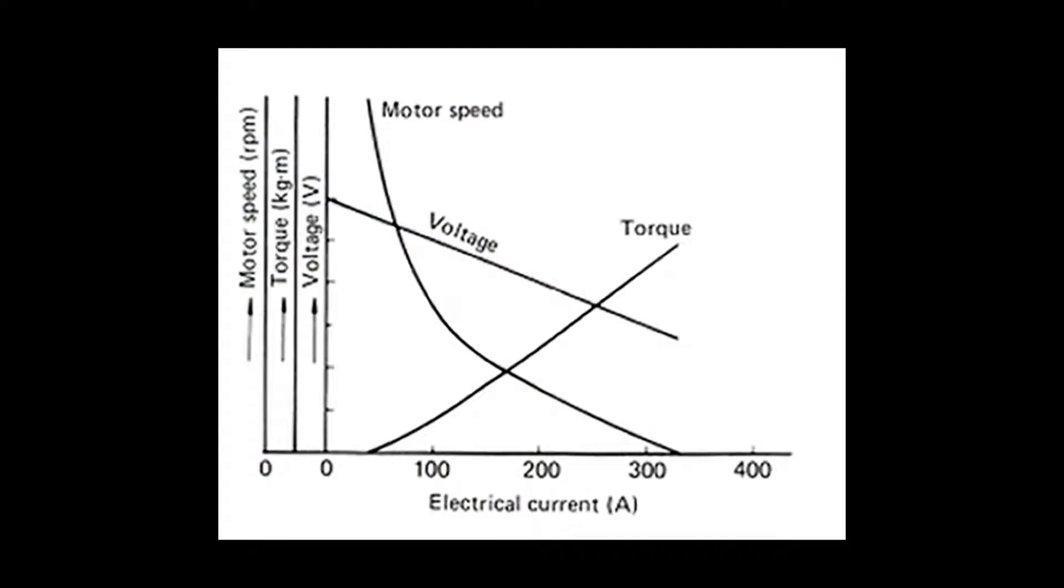To understand how current draw for a starter motor can be used to produce a relative compression test, you need to understand three simple concepts. When a DC series motor meets an increase in torsional resistance, it overcomes that resistance by generating more torque, and it gets energy for that torque by consuming more current. So you can estimate torque by looking at instantaneous current draw.